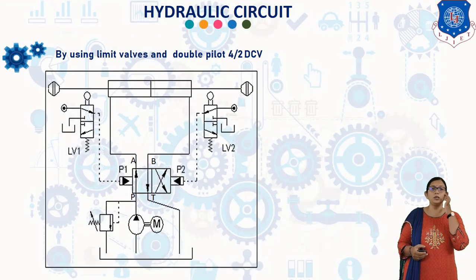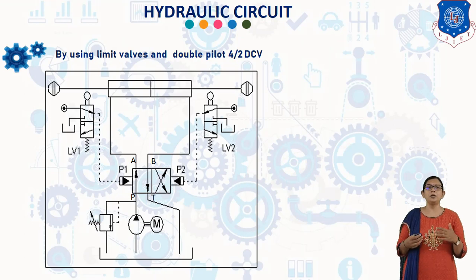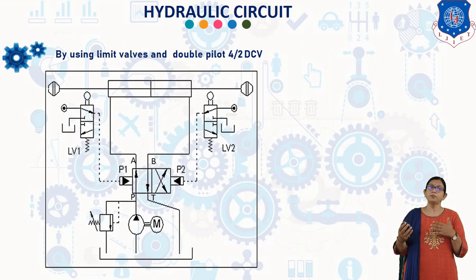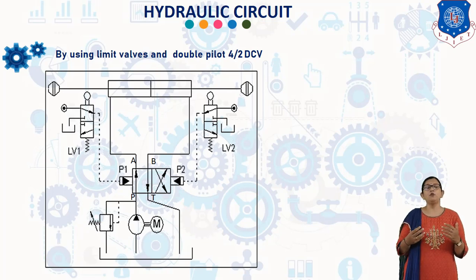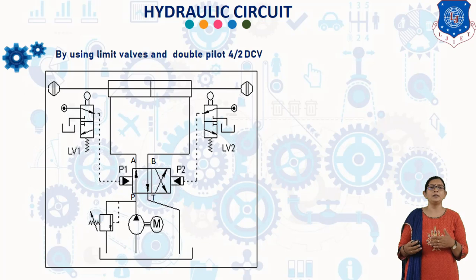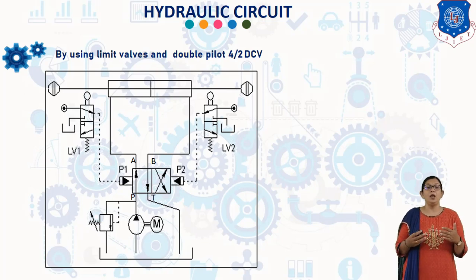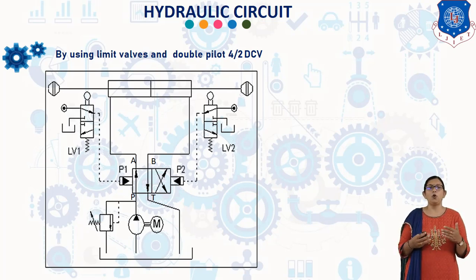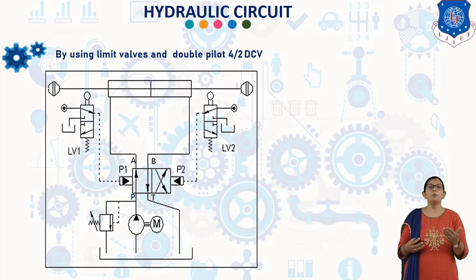Now we will discuss the hydraulic circuit using limit valves and a double pilot 4/2 DCV. In this circuit, a 4/2 double pilot DCV is used. There are two cam-operated DCVs, called limit valves, to operate this 4/2 DCV. When the limit valve is actuated, oil under pressure flows to the connected pilot port and shifts the spool of the 4/2 DCV to the other position.